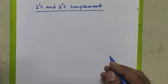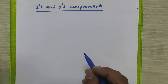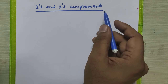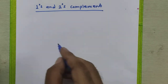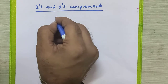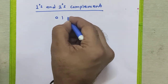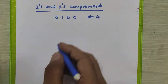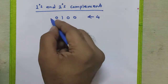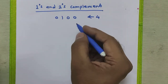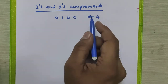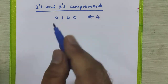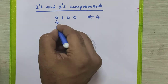Hello everyone. In this tutorial we are going to study how to find the ones complement and the twos complement of any binary number. Consider a binary number: 0 1 0 0, which is 4 in decimal. To find the ones complement of any binary number, we just have to replace the 0 by 1 and 1 by 0.